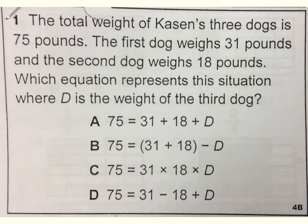Number one. The total weight of Kaysen's three dogs is 75 pounds. The first dog weighs 31 pounds and the second dog weighs 18 pounds. Which equation represents this situation where D is the weight of the third dog?